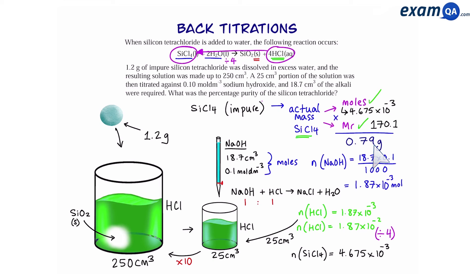So now to work out the percentage purity, we're going to do 0.79 divided by the whole mass times 100. And that gives us 66%.